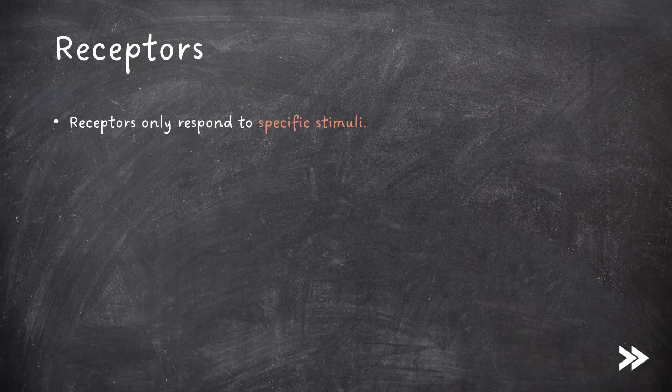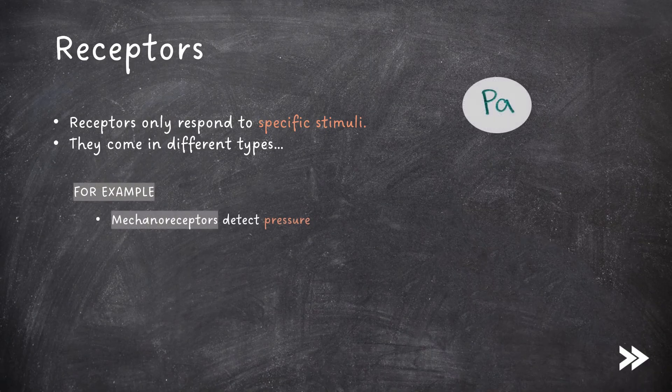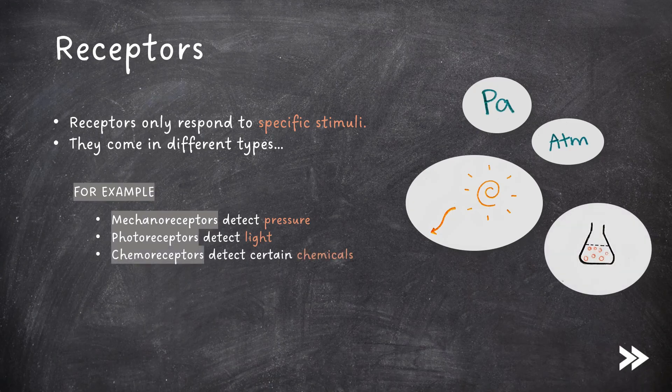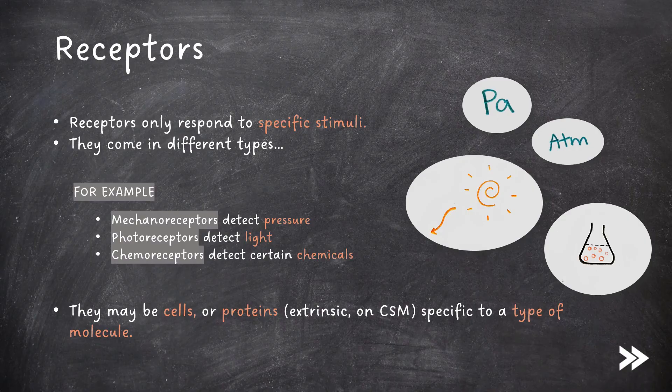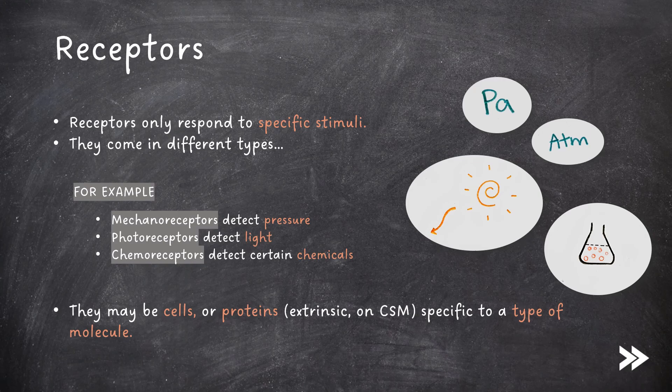Receptors only respond to specific stimuli. They come in different types, for example, mechanoreceptors detect pressure, photoreceptors detect light, and chemoreceptors detect certain chemicals. They may be cells or proteins, such as extrinsic proteins that are found on the cell surface membranes of cells, specific to a type of molecule. To watch my video on cell structure, which includes extrinsic proteins, just follow the link top right.